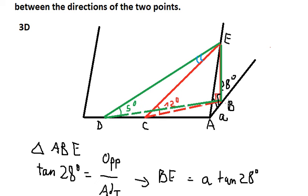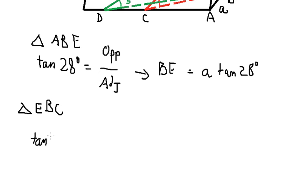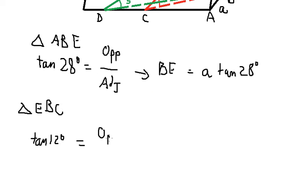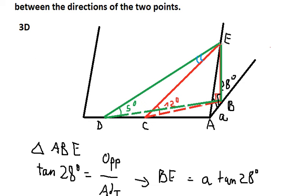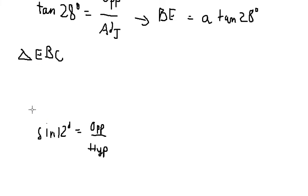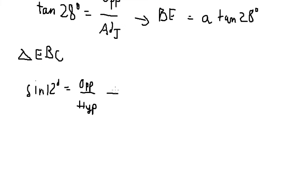For triangle EBC, we use tan(12°) — that is the right angle — and we have opposite divided by adjacent. Next we want to find line CE, so we use sin(12°): opposite divided by hypotenuse. The hypotenuse is CE, and the opposite is BE, which we just calculated.